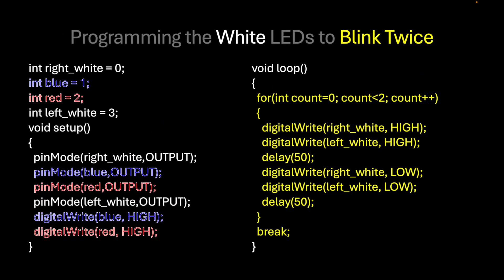The blinking of white lights on an airplane is not just like any other flashlight. For most of the time it is off, and for that very few milliseconds it would turn on. To do that precisely, we have to use a for loop that programs the white lights to blink twice.